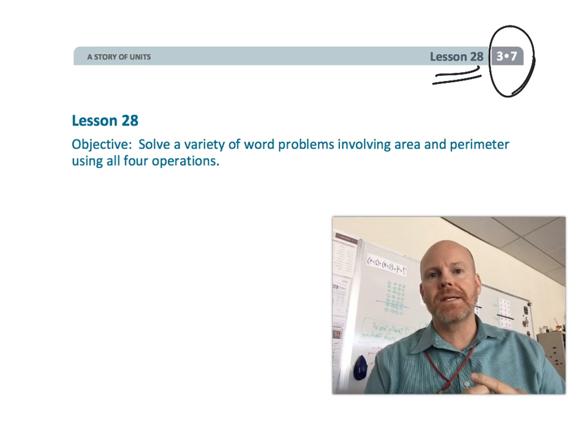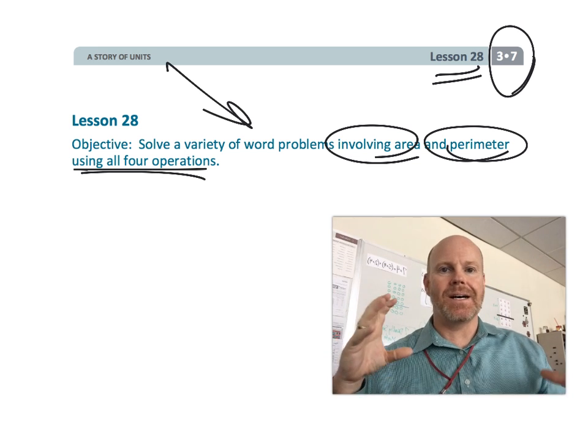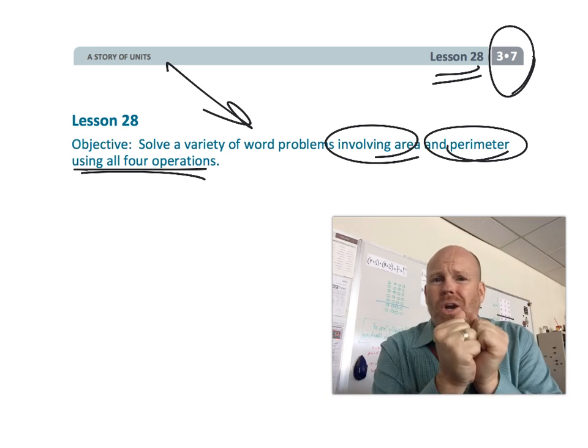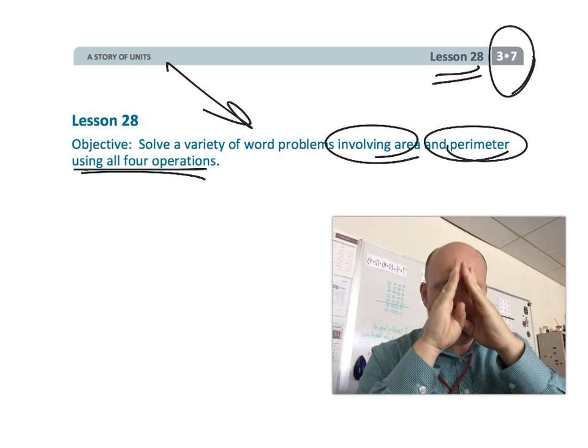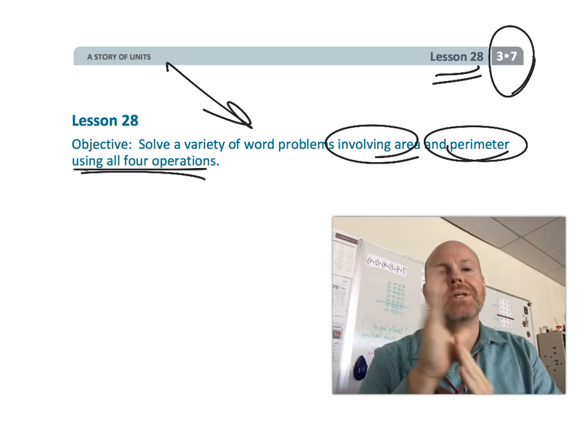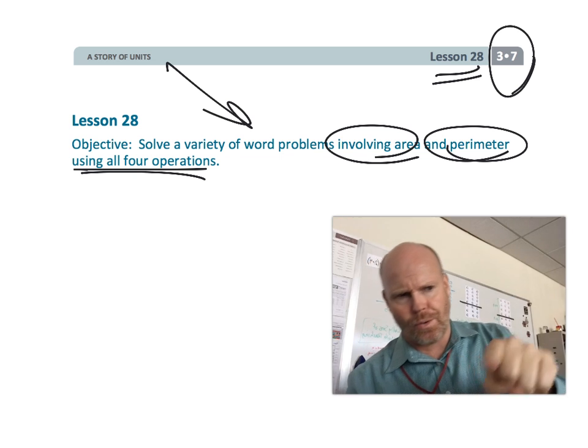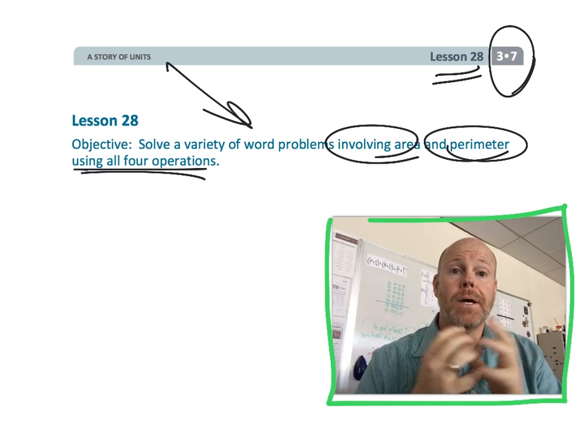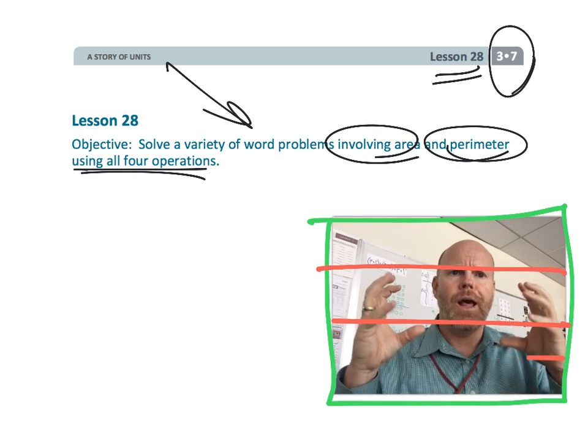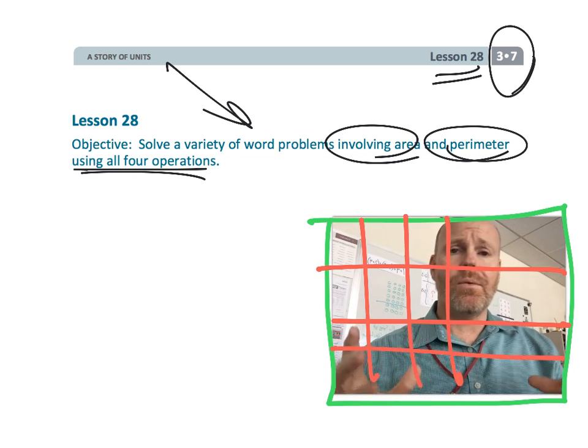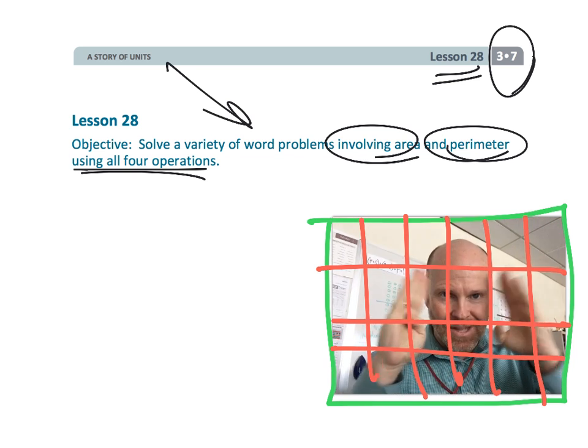They're going to be practicing area and perimeter in a variety of different contexts with word problems. Parents and teachers, our job is to help students keep in their mind the difference between area and perimeter. Classically, perimeter is the distance around the figure, and area is the number of tiles necessary to completely fill in that rectangle. We're trying to help students understand the difference between the two.